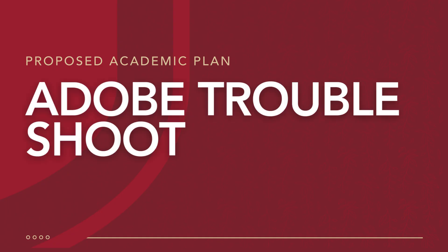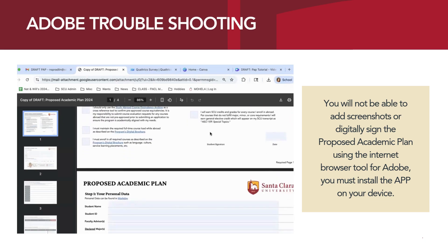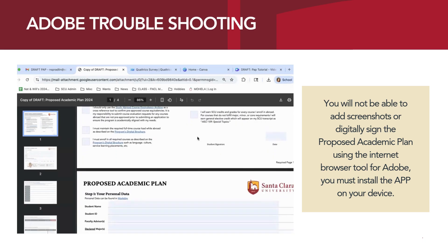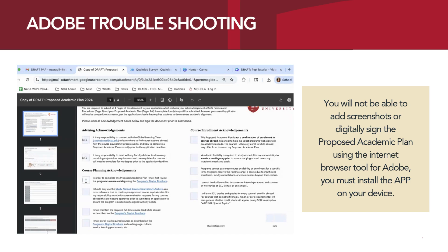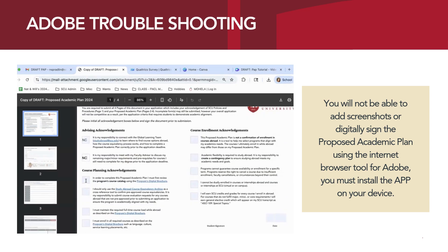If you experience any technical difficulties with Adobe, it may be because of these reasons on the next few slides. When you download the Proposed Academic Plan, at first it will appear as being editable in your internet browser. However, even though you may be able to put initials and text into that document in the internet browser, you're not going to be able to add screenshots or digitally sign the Proposed Academic Plan, which is a requirement, using that internet browser tool. So do download Adobe directly on your device so that you can incorporate the screenshots and digitally sign the document.